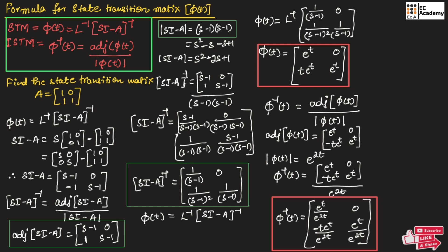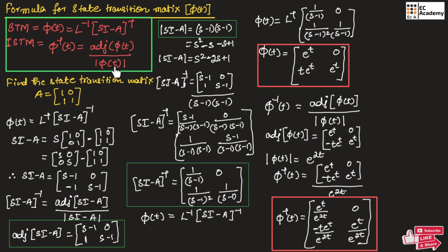The state transition matrix can be given as the inverse Laplace transform of (SI - A) inverse. To find the state transition matrix, we first need to find (SI - A) inverse in the S domain, then take the inverse Laplace transform to convert back to the time domain. We can also find the inverse state transition matrix as the adjoint of the state transition matrix divided by the determinant of the state transition matrix. You need to remember these two formulas.